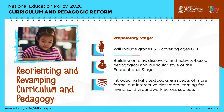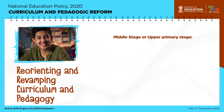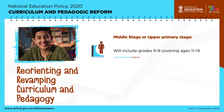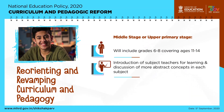The preparatory stage includes grades 3 to 5, covering ages 8 to 11, building on the play, discovery, and activity-based pedagogical and curricular style of the foundational stage. It introduces light textbooks and aspects of more formal but interactive classroom learning to lay a solid grounding across subjects. The middle stage or upper primary stage includes grades 6 to 8, covering ages 11 to 14, with subject teachers introduced for learning and discussion of more abstract concepts in each subject.